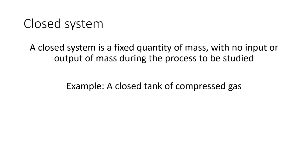So the first type of system that we have is a closed system. A closed system is a fixed quantity of mass with no input or output of mass during the process. For example, we could think of a closed tank of compressed gas. Let's say this is hydrogen in here. That's a closed system.